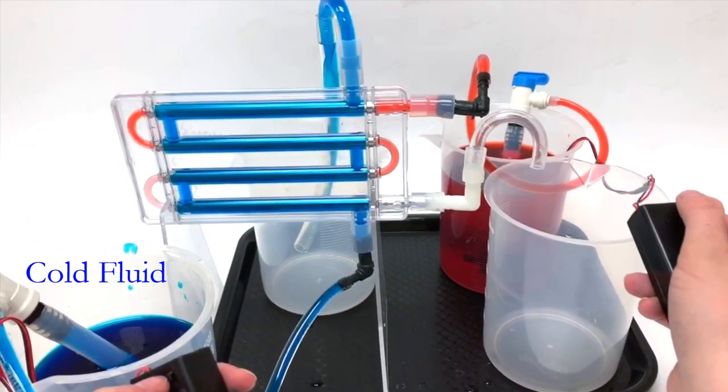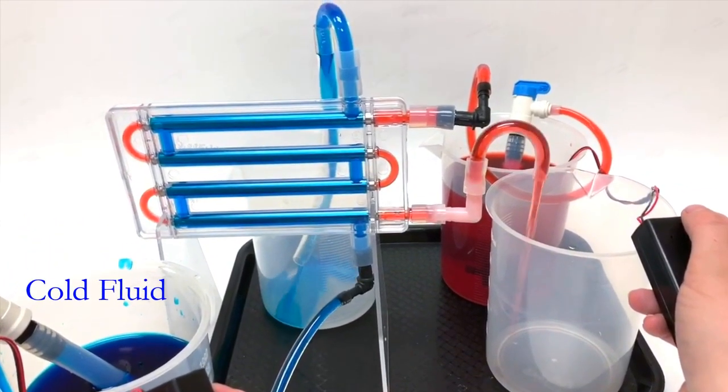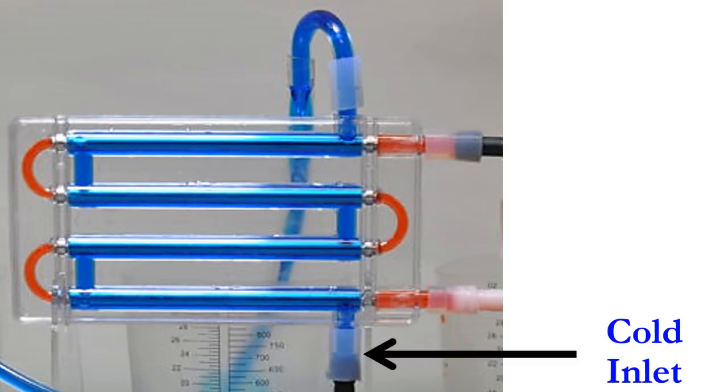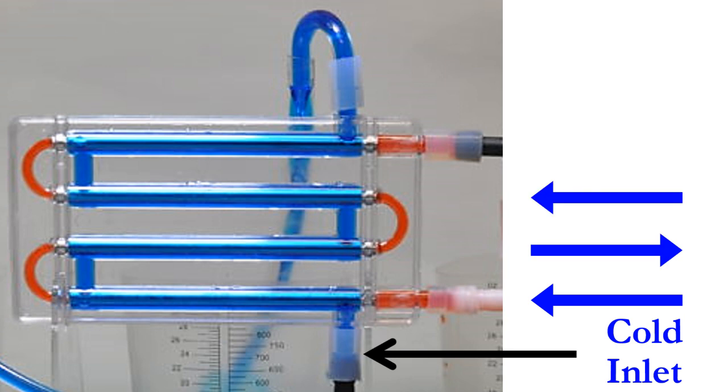Here are a few key observations about the cold flow. The cold comes in at the bottom and flows left at the bottom, right in the second lowest pipe, left in the second highest pipe, right in the highest pipe, and exits out the top.